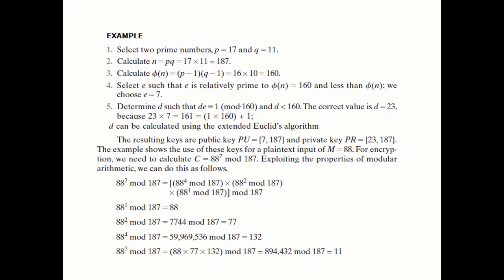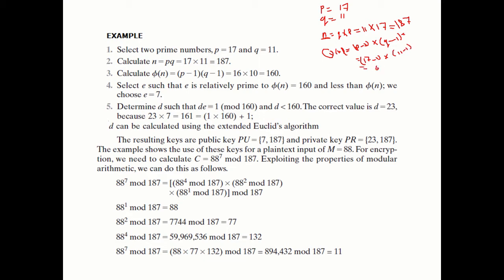Let's take a real example. Say P = 17 and Q = 11 — these are two prime numbers. We calculate n = 11 × 17 = 187. Then phi(n) = (17−1) × (11−1) = 16 × 10 = 160.